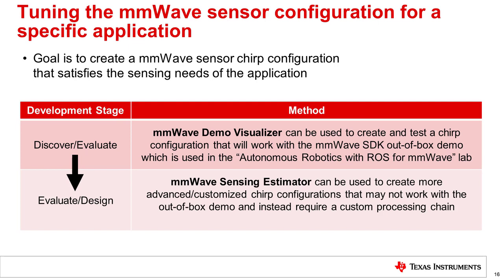The second method is typically used during the evaluation or design stages and uses the millimeter wave sensing estimator tool. It is a much more flexible tool that can be used to create more advanced or customized chirp configurations. However, it may require more time and effort as it can generate configurations that may not work with the out-of-box demo and instead require the creation of a custom processing chain on the device. Let's look at each method in a bit more detail.